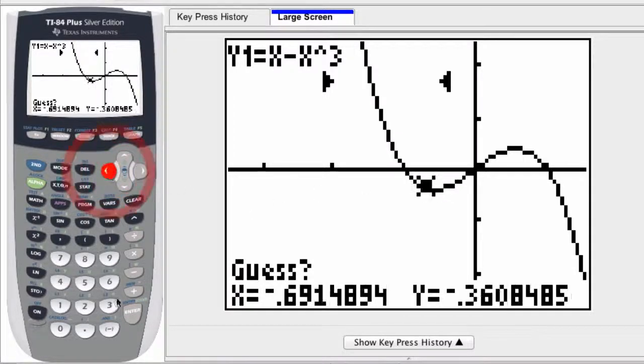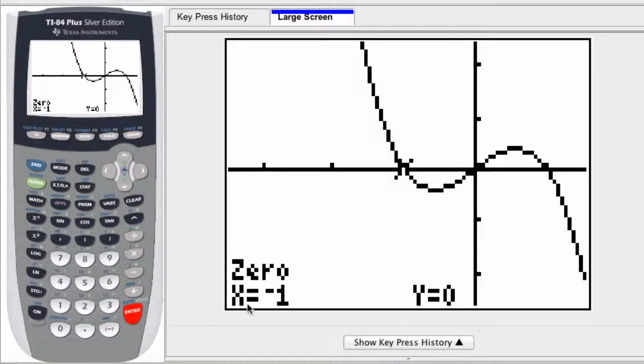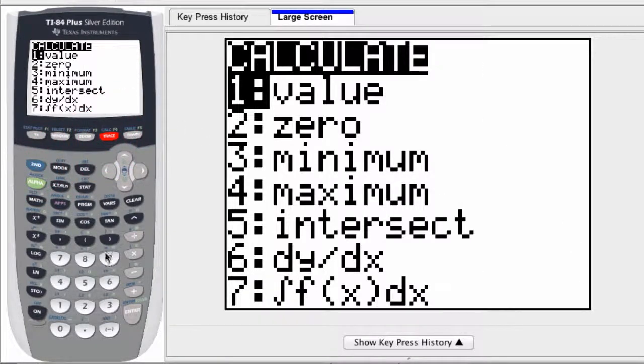Now you choose a guess in that interval, press enter, and it tells you the x value when y is zero. Now you might want to choose a situation if you hit second trace again and try to find the zero.